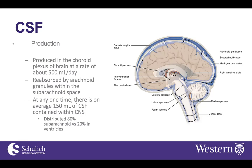From the choroid plexus, once the CSF is produced, it circulates within the ventricular system in the brain and eventually gets into the subarachnoid space, where it's reabsorbed by arachnoid granules. At any one time there's about 150 mls of CSF within the central nervous system, primarily distributed within the subarachnoid space versus about 20 percent in the ventricles.